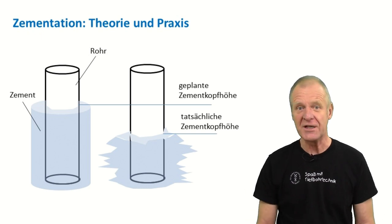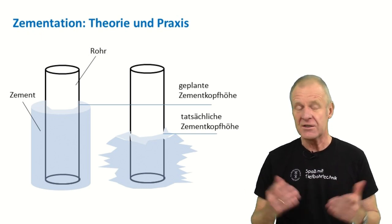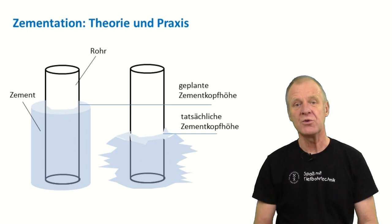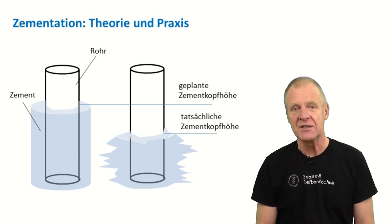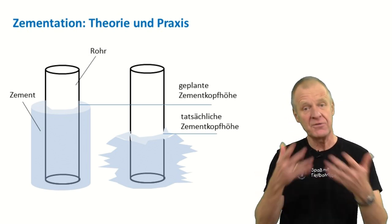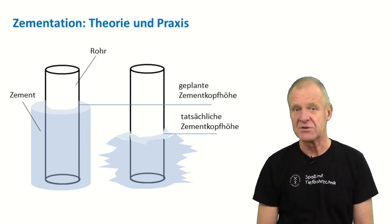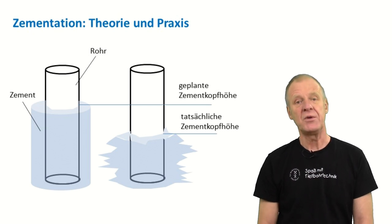Of course, the same thing happens with deep drilling in the earth. It is common that the borehole ends up much larger than expected. Then the cement slurry flows into the excess volume of the borehole and this results in a situation where the cement head does not reach the desired height. This is of course a big problem.